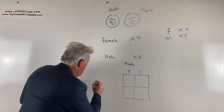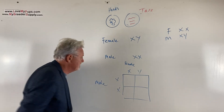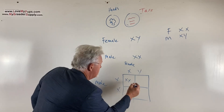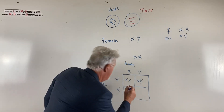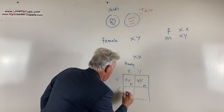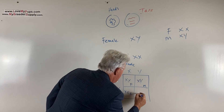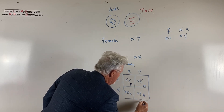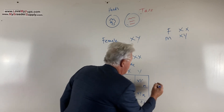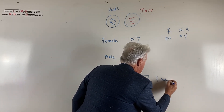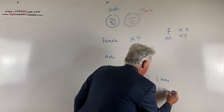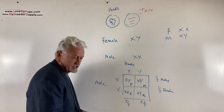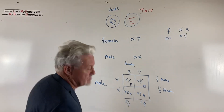If you do a Punnett square with the female on top — she can contribute X or X — and the male on the side — he can contribute X or Y — the four possible outcomes are: XX (female), XY (male), XX (female), XY (male). So you've got two males out of four and two females out of four, meaning basically half will be males and half will be females.